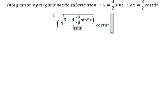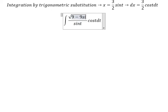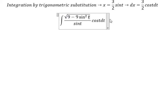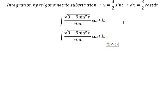4 multiplied with 9 over 4 gives us 9 sin²(t). The square root of 9 we put outside, giving us 3.